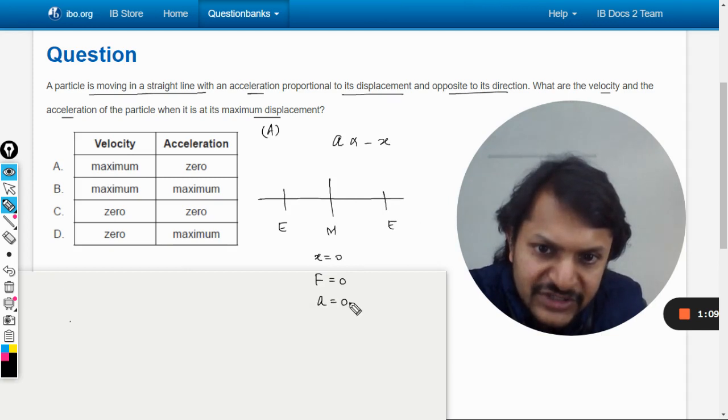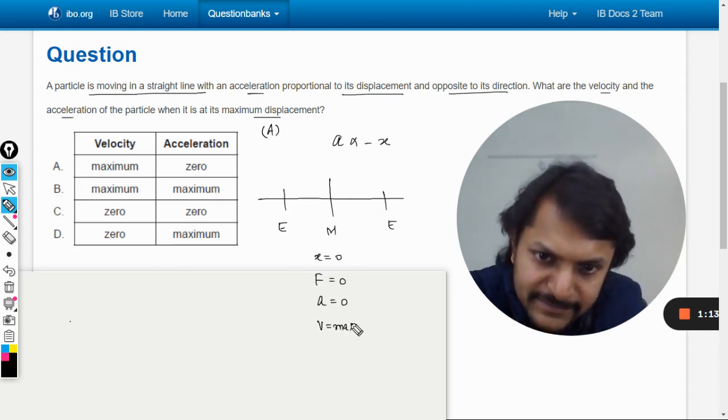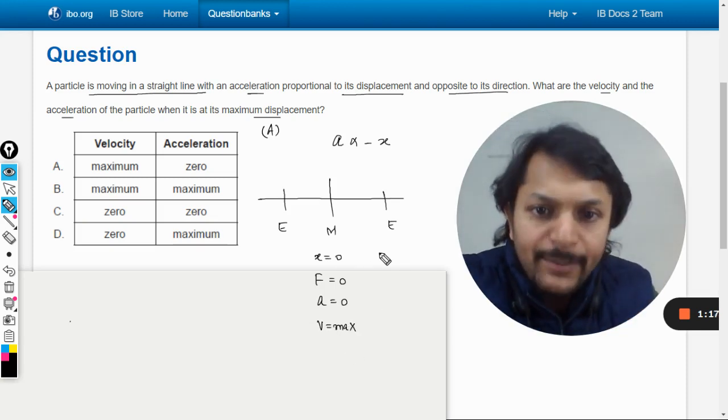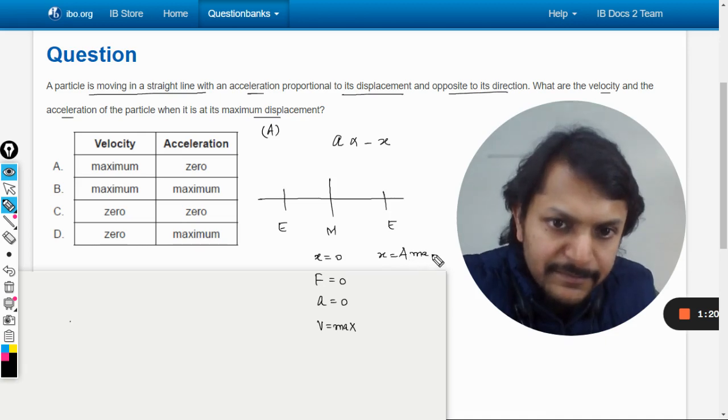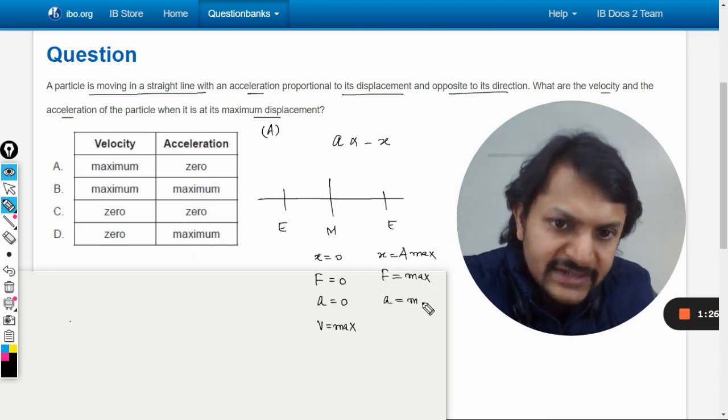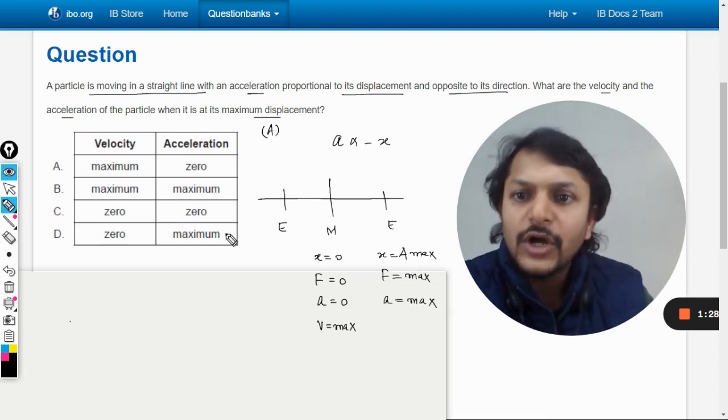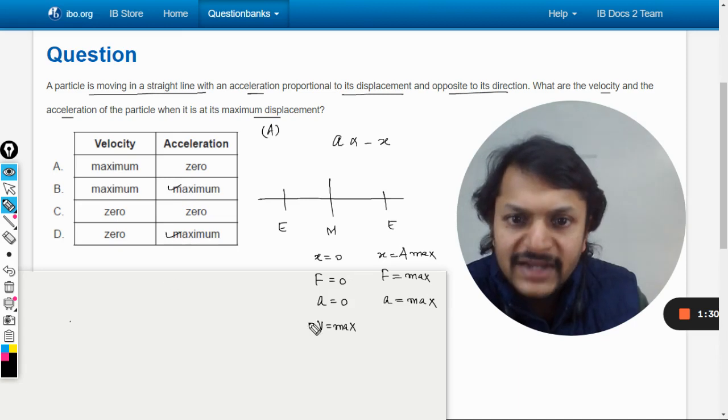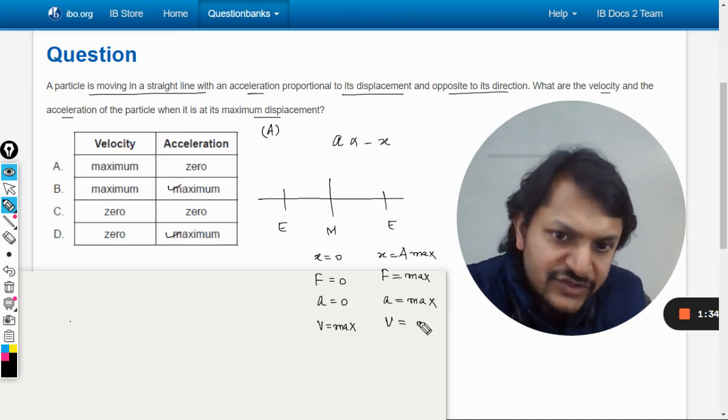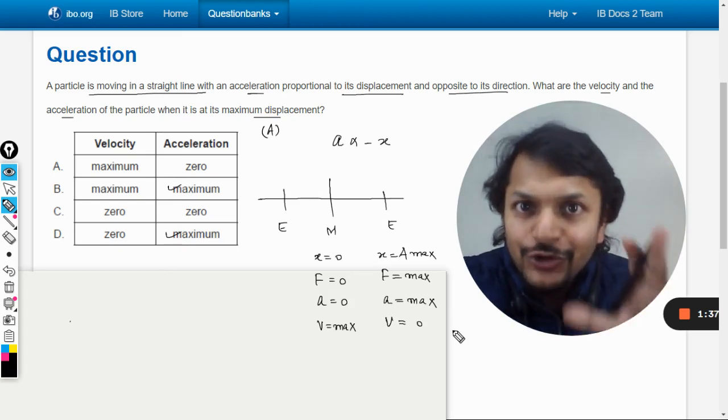Hence the acceleration is zero but the velocity is max. At the extreme position, the displacement becomes maximum, so the restoring force is max and the acceleration is also maximum. What about velocity? The velocity at the extreme position is zero.